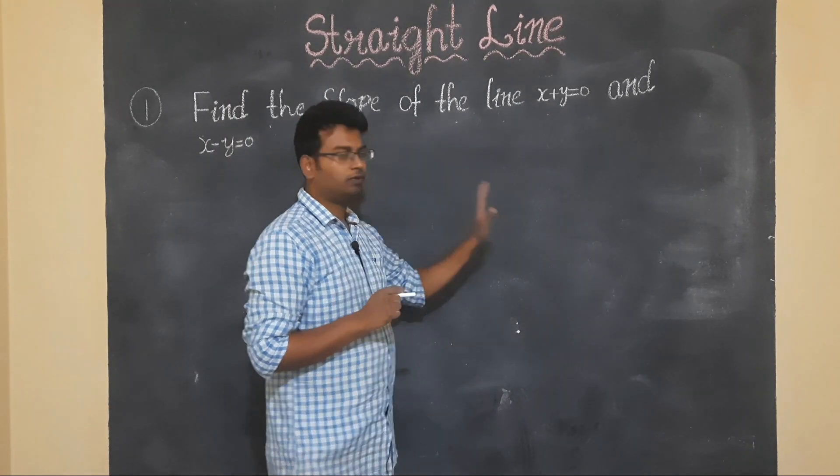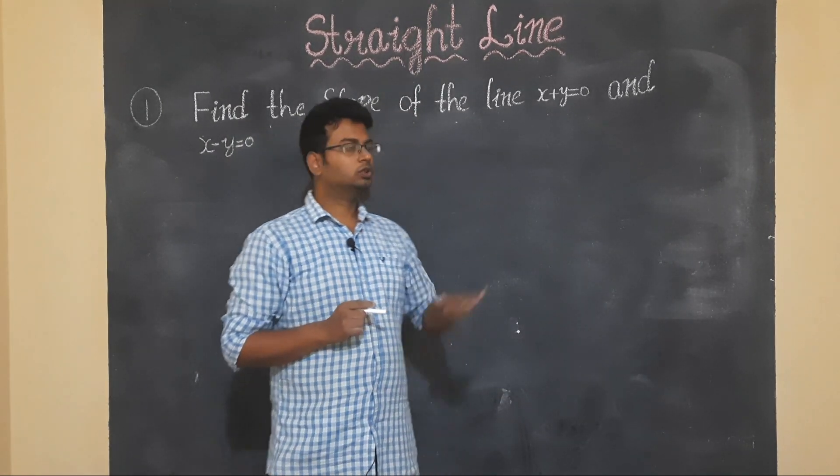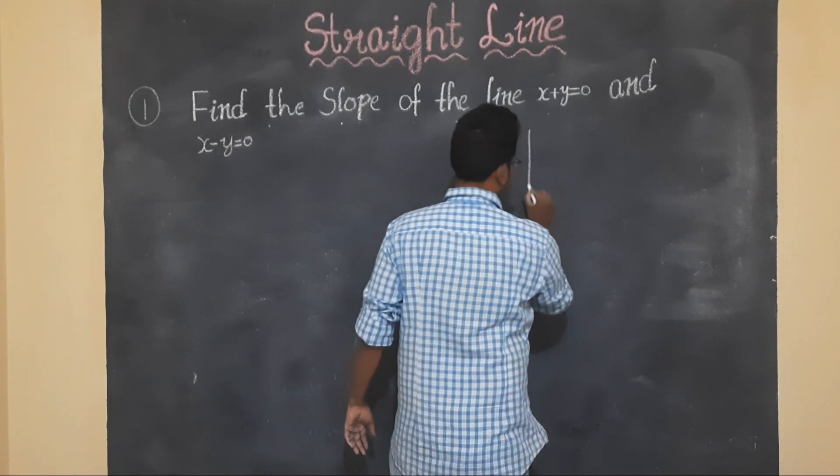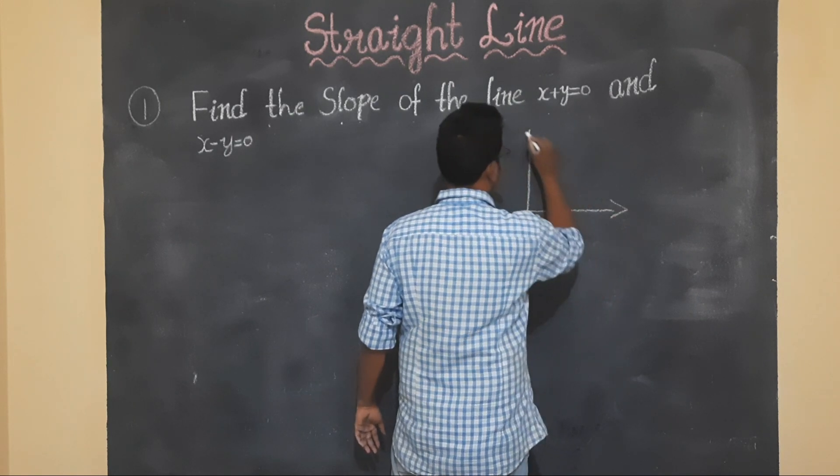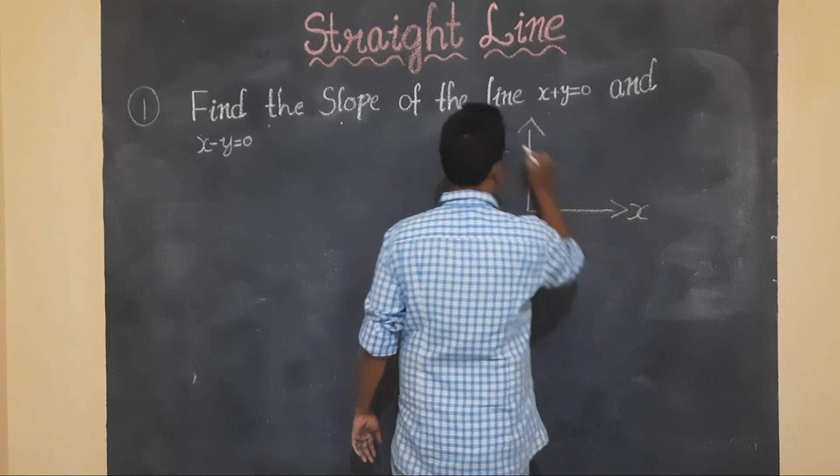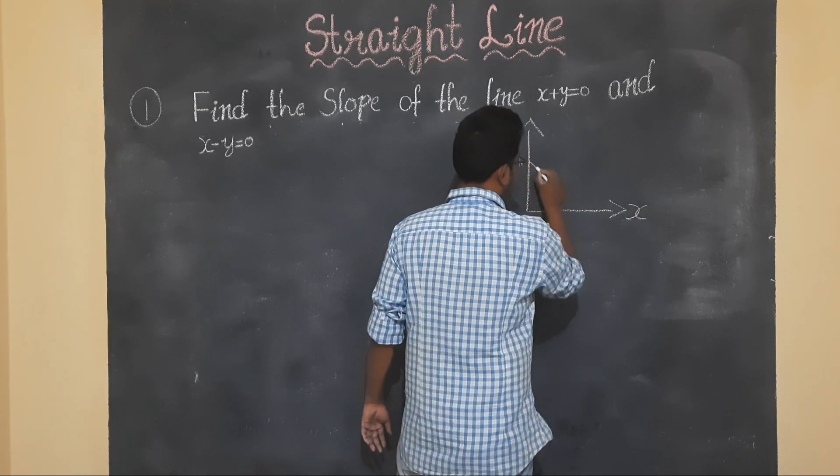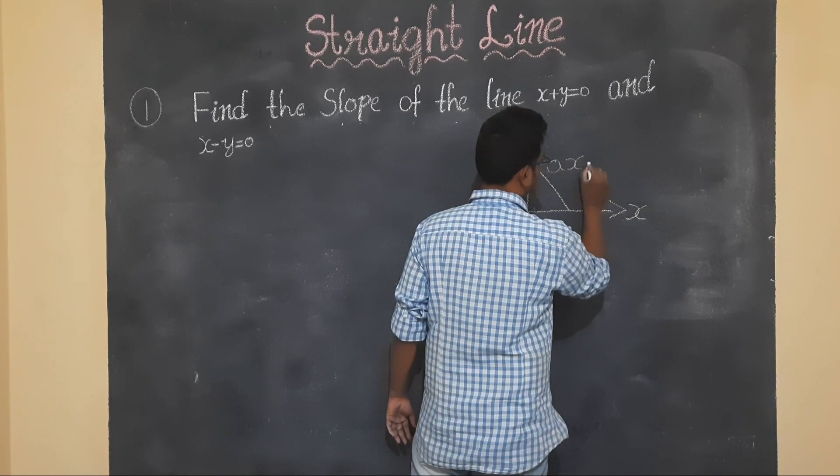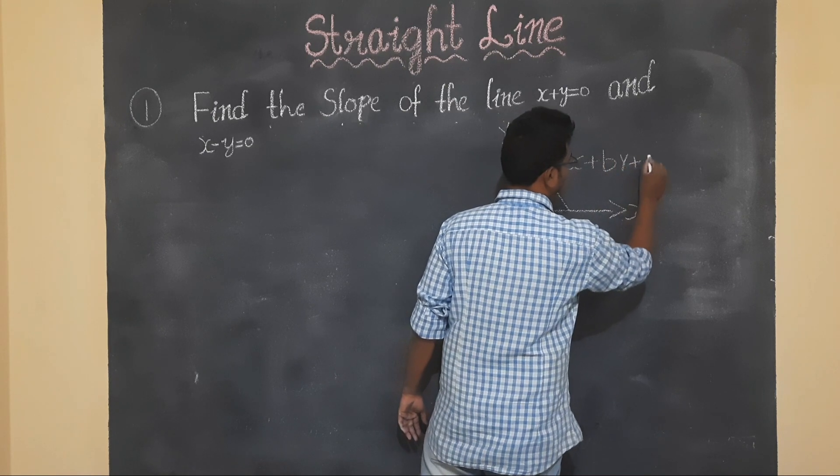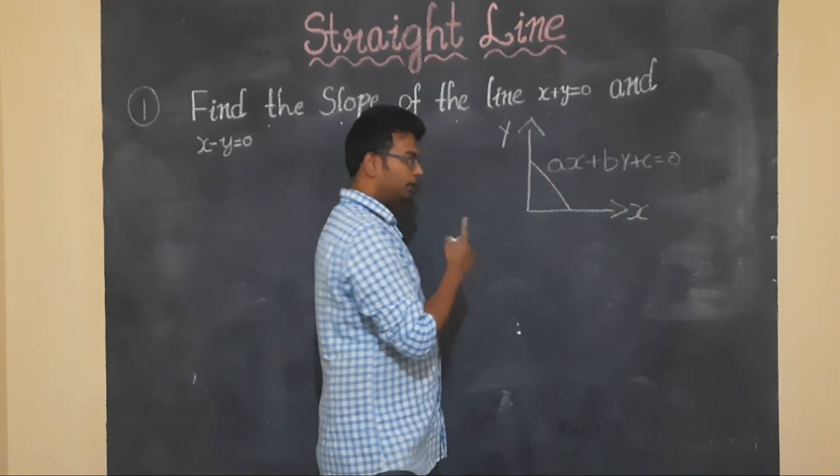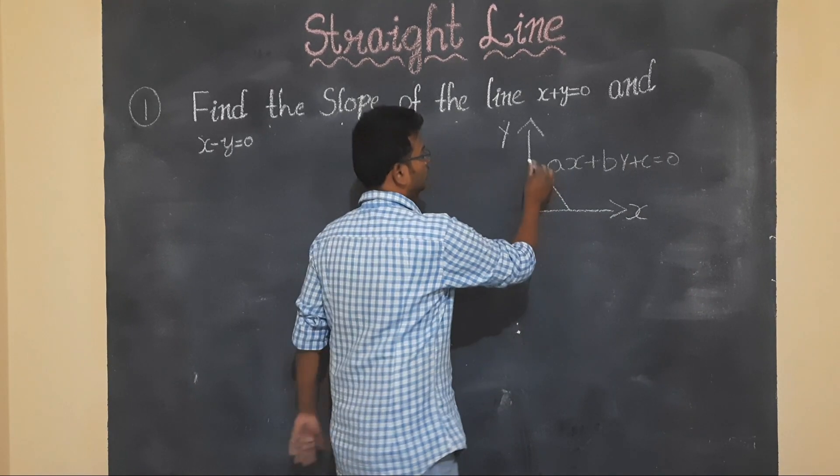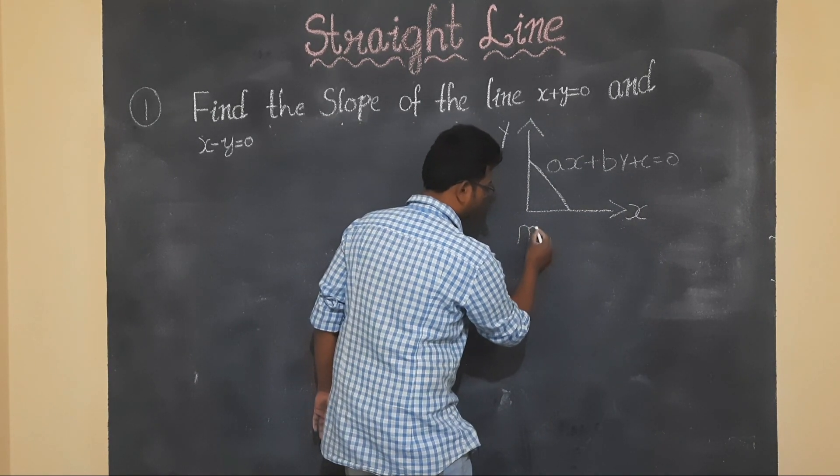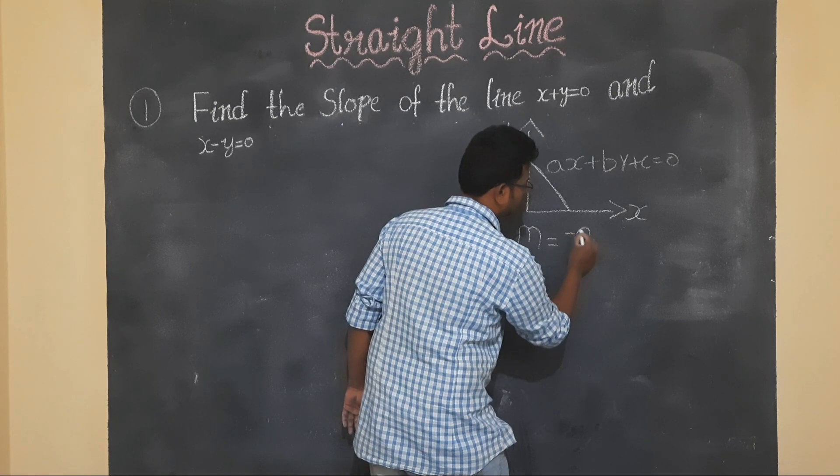The equation's slope is found as follows. I assume this is ax plus by plus c is equal to 0. So the slope will be minus a by b.